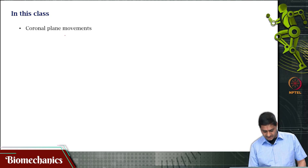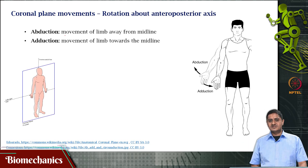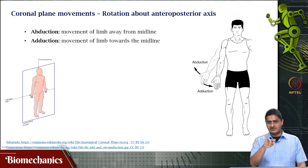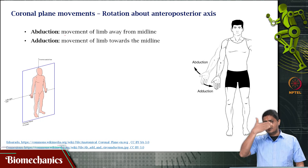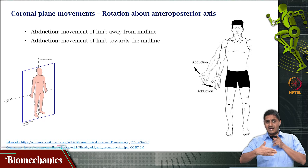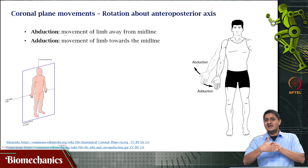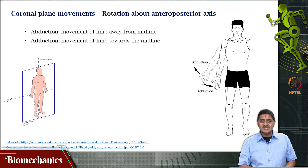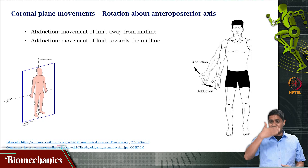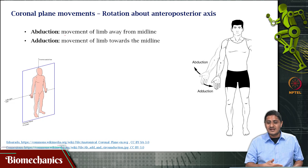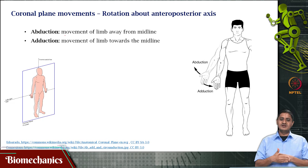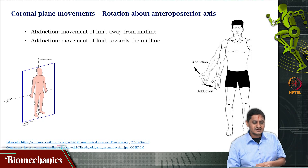If movements are happening in the coronal plane, these movements must happen about an axis that goes from the back of the body to the front of the body, or from the front of the body to the back of the body. In other words, these movements are happening about an axis that is passing through this plane. This is the antero-posterior axis. This plane is called the frontal plane or the coronal plane, and the movement is happening about the antero-posterior axis.